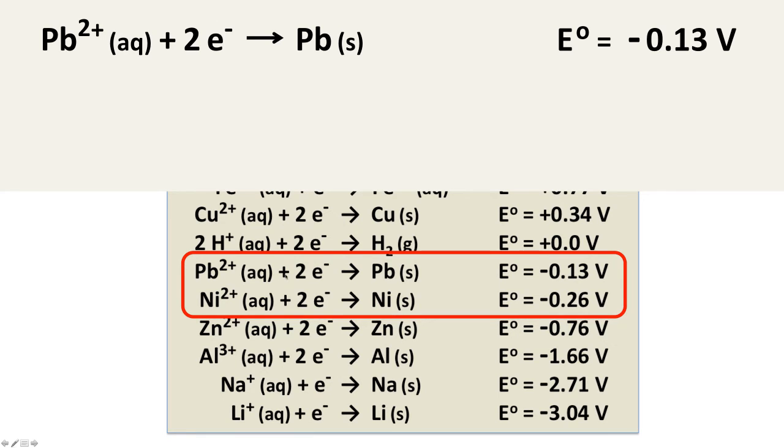If lead two plus is reduced, then the nickel has to undergo oxidation. And this half reaction, nickel two plus plus two electrons makes nickel solid, gets reversed. So as an oxidation, it's nickel solid makes nickel two plus plus two electrons, and reversing the reduction half reaction to make it an oxidation half reaction reverses the sign of the potential. So it's +0.26 volts instead of negative.